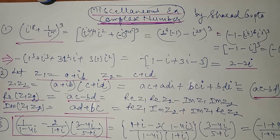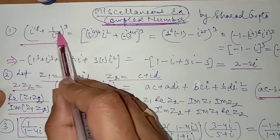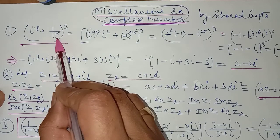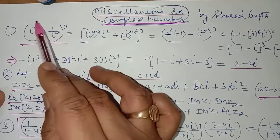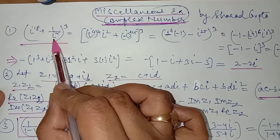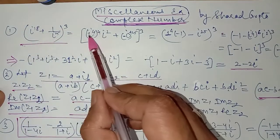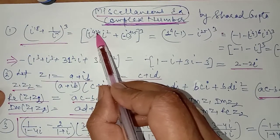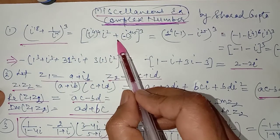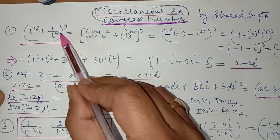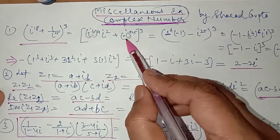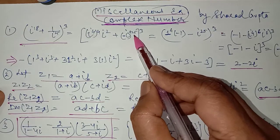In question number 1, you have to find the whole cube of i raised to power 18 upon 1 upon i raised to power 25. First of all, simplify i raised to power 18 and i raised to power 25. For i raised to power 18, you can write i raised to power 4, raised to power 4, into i square. And for 1 upon i raised to power 25, you can write i raised to power minus 25.